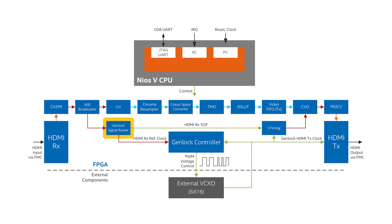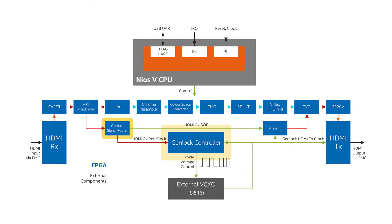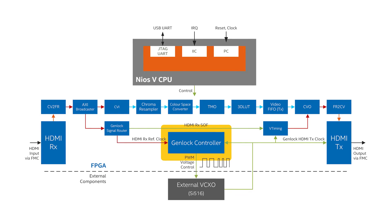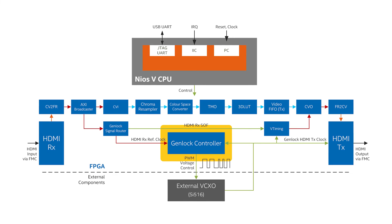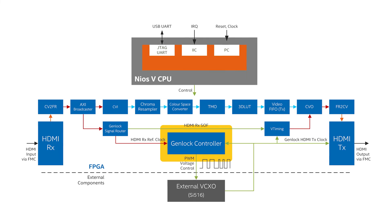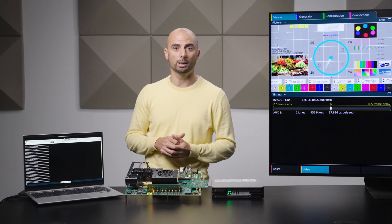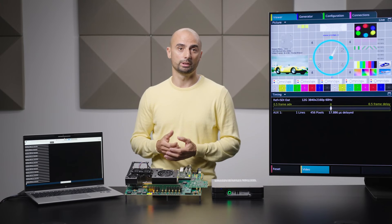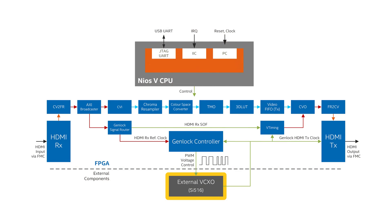A genlock signal router generates video synchronization signals based on video timing markers derived from the input video stream. A genlock controller IP, which is a control loop system, can be paired with external VCXO devices such as the SI516 in this case, which has control voltage input capabilities. This IP takes the input video RX clock and TX clock and generates a PWM-type signal proportional to the difference between the RX and TX clock periods caused by clock drift. The PWM signal is connected to the voltage control input pin of the external VCXO to reduce clock drift, so the generated TX clock is locked to the RX reference clock.